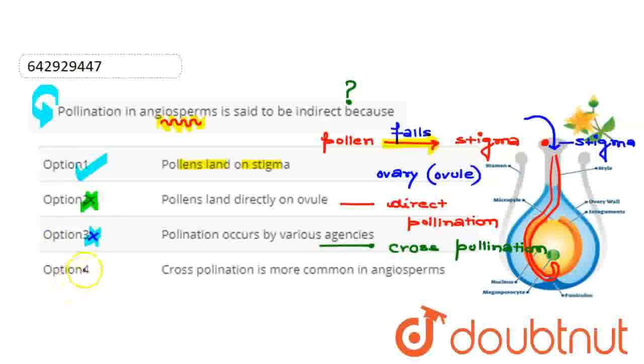Last, we have given cross-pollination is very common in angiosperms. But if we talk about angiosperms, they have self-pollination. So this is all about the options, and we conclude that option first is the correct answer.